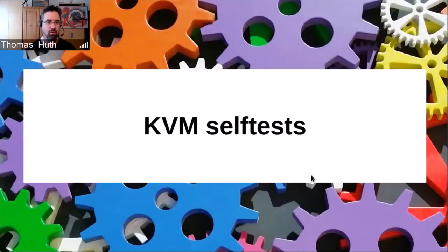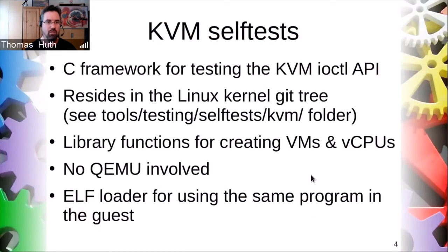Let's get started with the lowest layer first: the KVM self-tests. The KVM self-tests are a framework written in C, designed for testing the KVM part in the kernel directly at the IOControl API level. The framework is part of the Linux Git repository and provides library functions for directly creating virtual machines and virtual CPUs in a test program — meaning there is no typical user space application like QEMU involved. The framework also contains an ELF loader, which allows you to load the binary code of the host test program into the guest, so that both the host test and the guest code can reside in one source file.